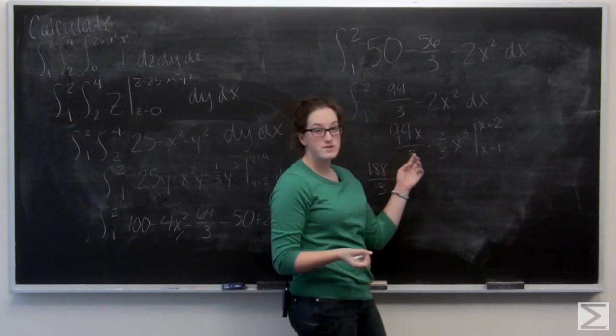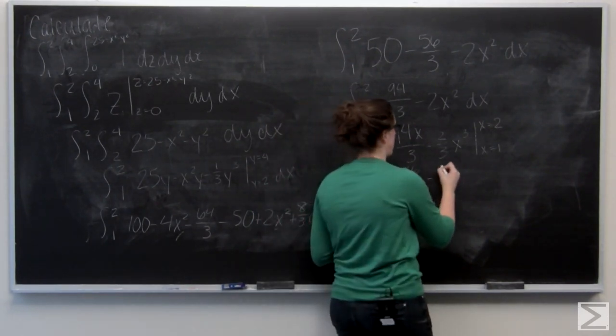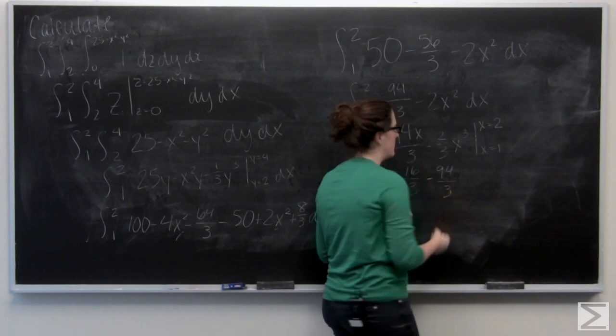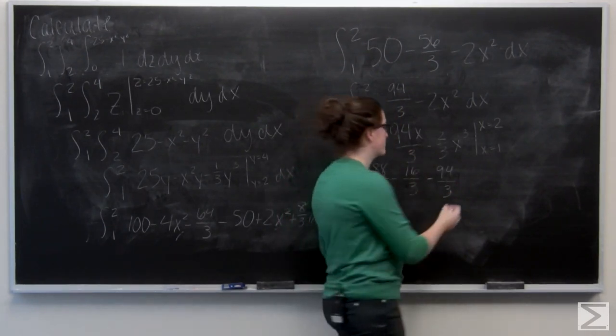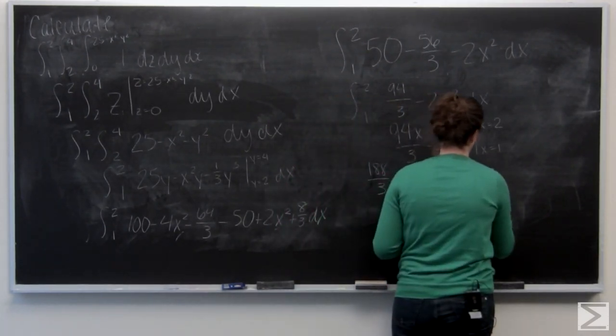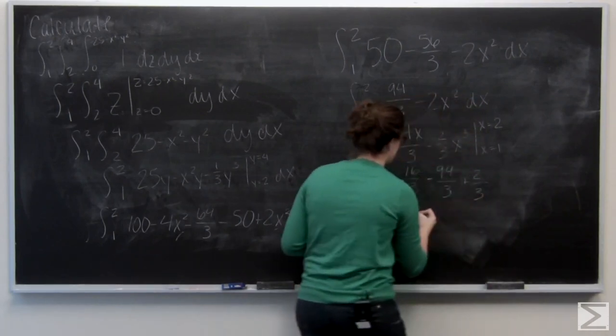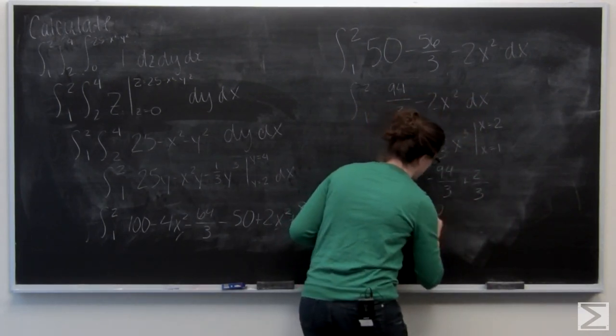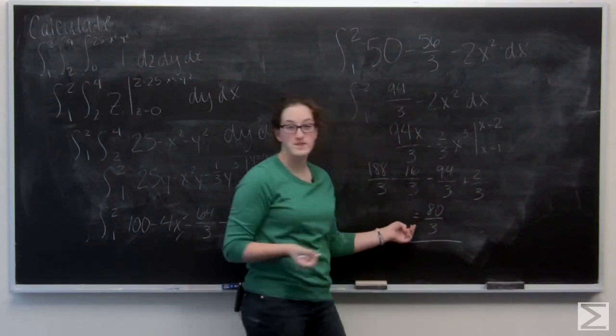Now I'm going to subtract 94 thirds and add 2 thirds, which equals 80 thirds. And that's our answer.